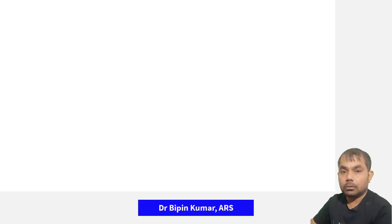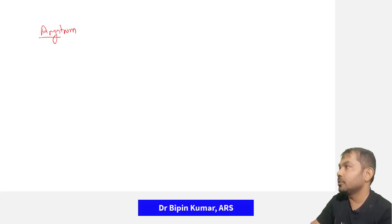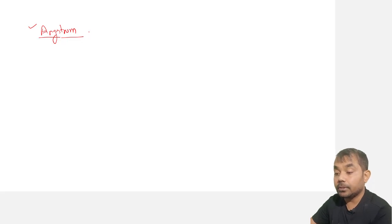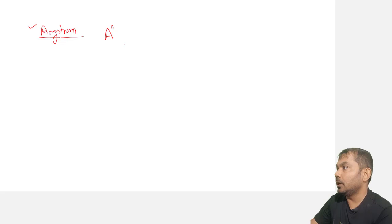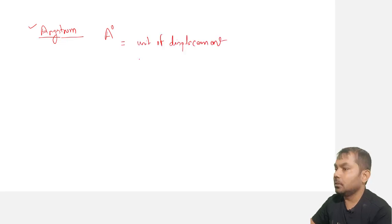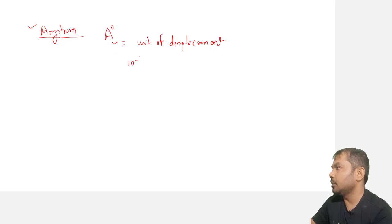In this video we are going to talk about some important terms and points of agriculture. The first term is the Angstrom. The Angstrom can be denoted by this symbol and it is a unit of displacement. One Angstrom is equal to 10 to the power minus 10 meter.